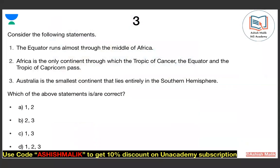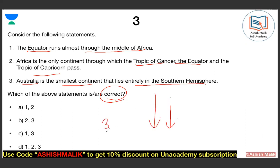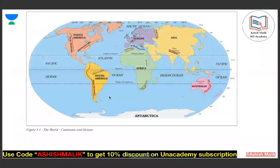One more map-based question. Tell me which statements are correct. The first statement says the equator passes through the middle of the African continent. Africa is the one continent in the world through which the Tropic of Cancer, the Equator, and the Tropic of Capricorn all pass. All three statements are correct, so the answer will be D.